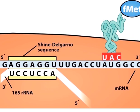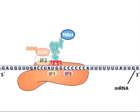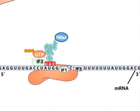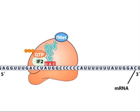In the next step of initiation, IF1 and IF3 are released, and the 50S ribosomal subunit binds to the complex. This association triggers the hydrolysis of bound GTP and the release of IF2, now bound to GDP.